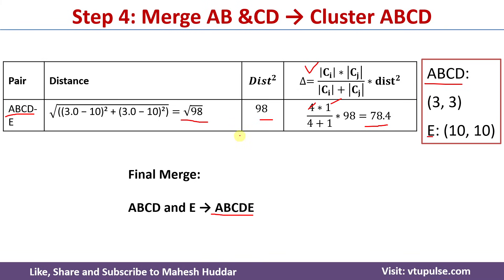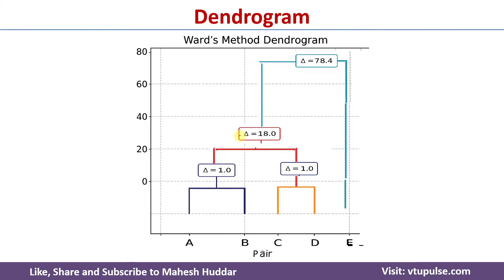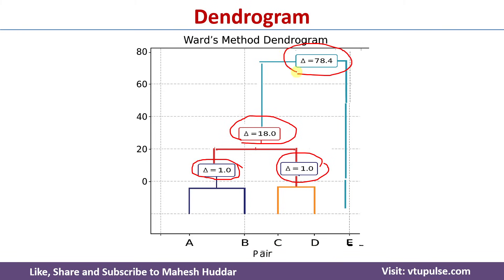Once we find the merging cost for all pairs, we draw the dendrogram. The dendrogram looks like this: first we merged A and B with a merging cost of 1; next we merged C and D with a merging cost of 1; after that we merged AB and CD with a merging cost of 18; finally we merged ABCD with E with a merging cost of 78.4. This is how we can find the merging cost and draw the dendrogram.